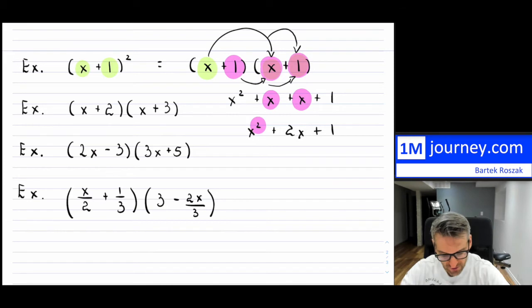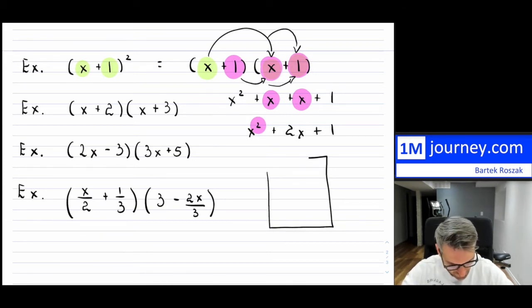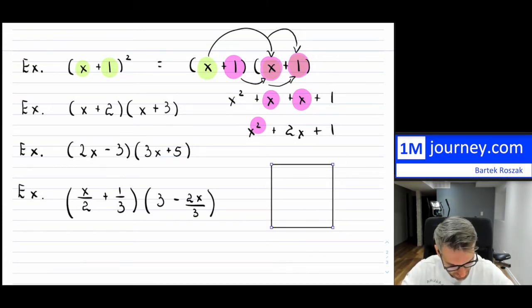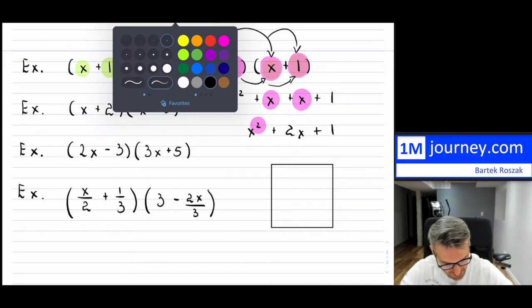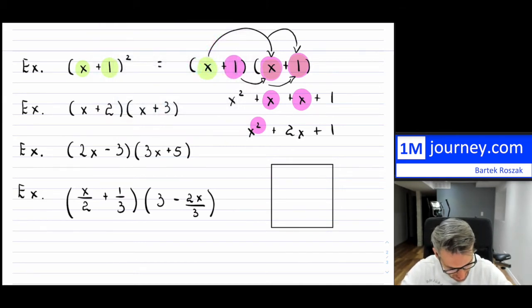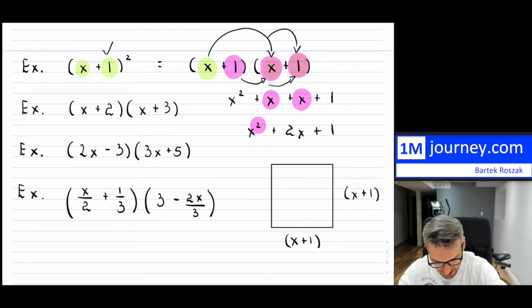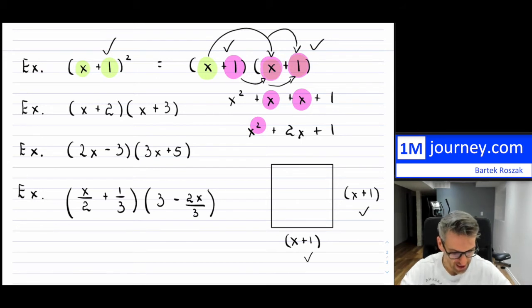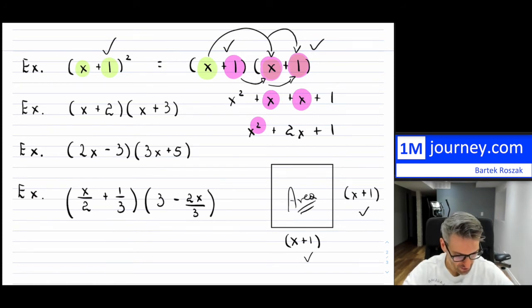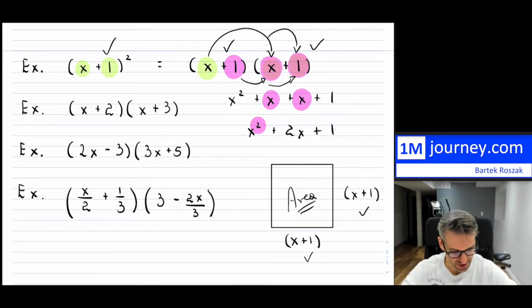Think back to squares. Visually, what this is saying is that we're taking x plus one — and now we're squaring it, so it's almost like we're taking the area. Because we had x plus one times x plus one, we don't know exactly what the side is, but we can certainly find the entire area by multiplying those. That's the first example expanded — it gives us this expression.